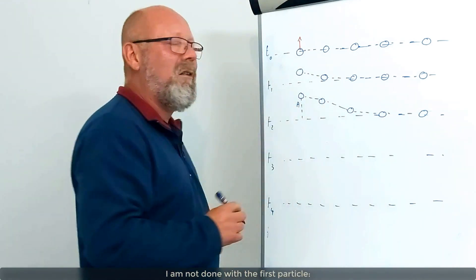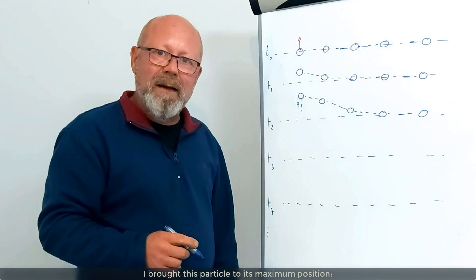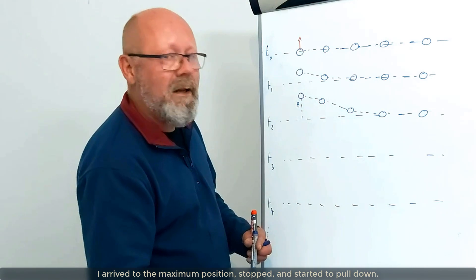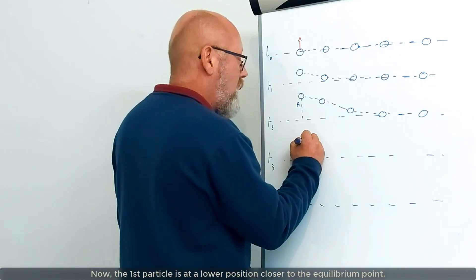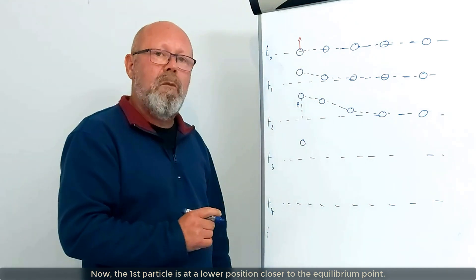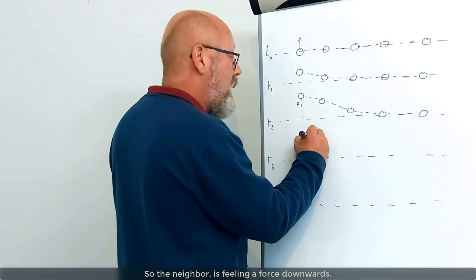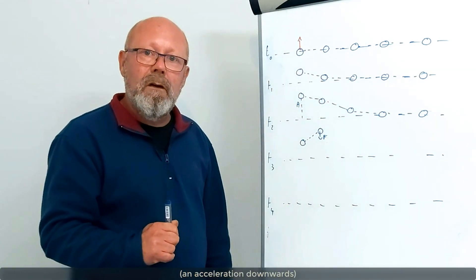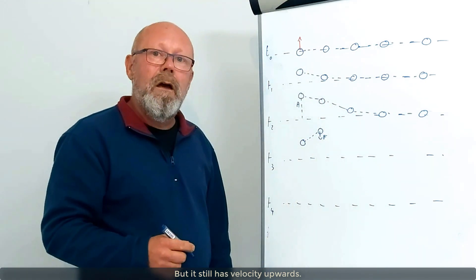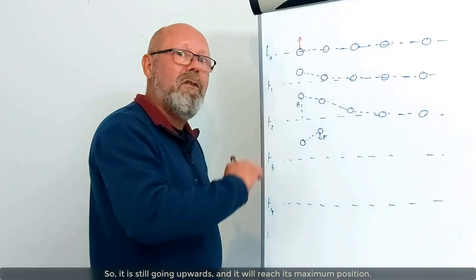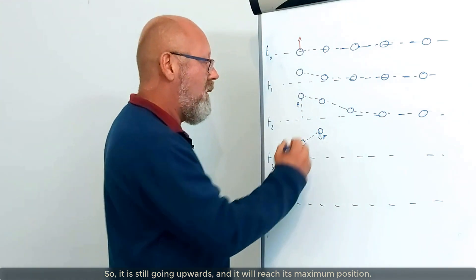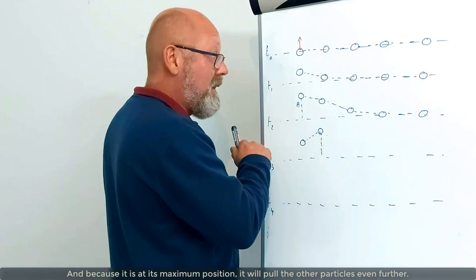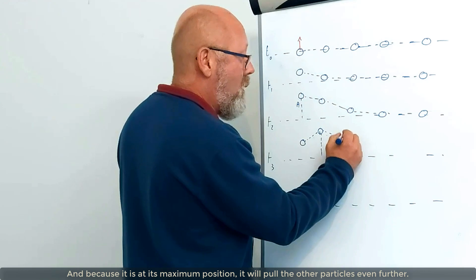But I'm not done with the first particle. I brought this particle to its maximum position, meaning that I arrived to the maximum position, stopped and started to pull down. Therefore, now this particle is at a lower position, closer to the equilibrium point. So, the neighbor is feeling a force downwards, an acceleration downwards. But it has still velocity upwards, meaning that it is decelerating. It's still going upwards and it will reach its maximum position. Let's say it's here. And because it is at its maximum position, it will pull the other particles even more.